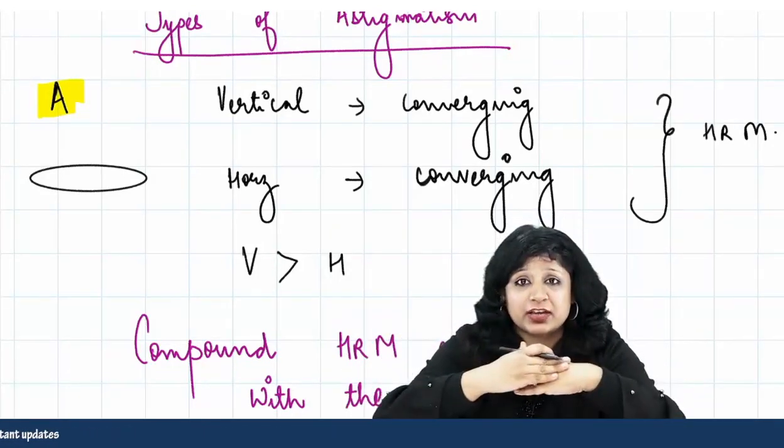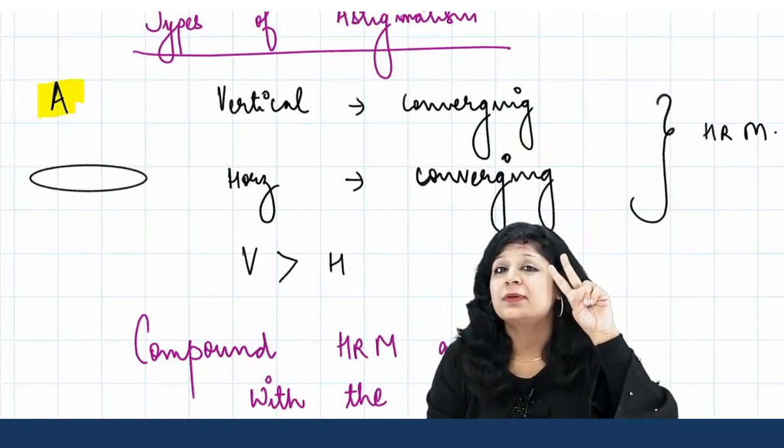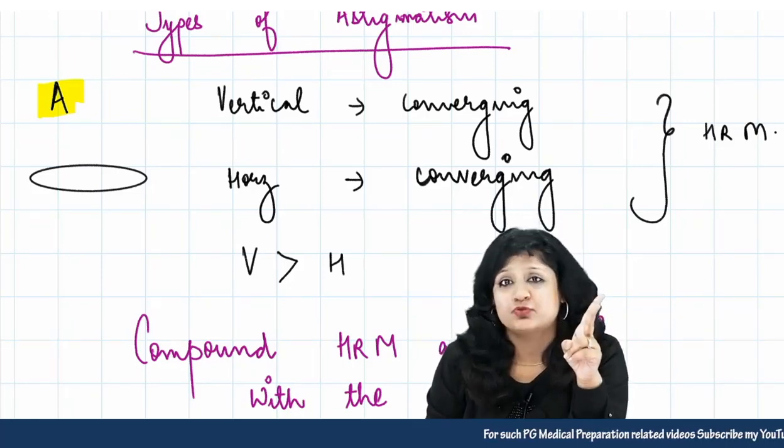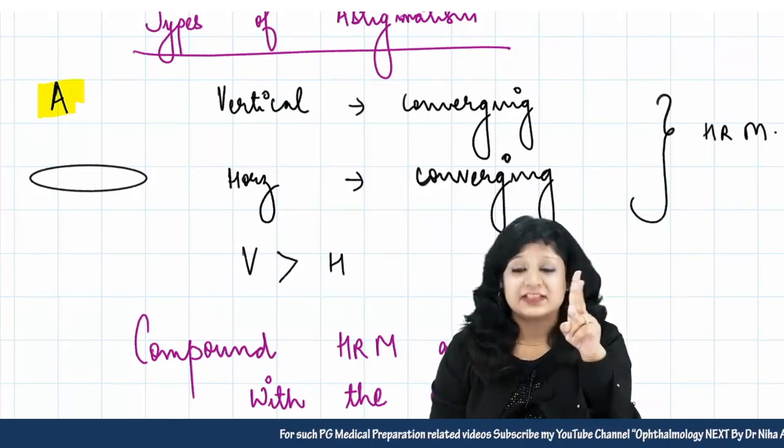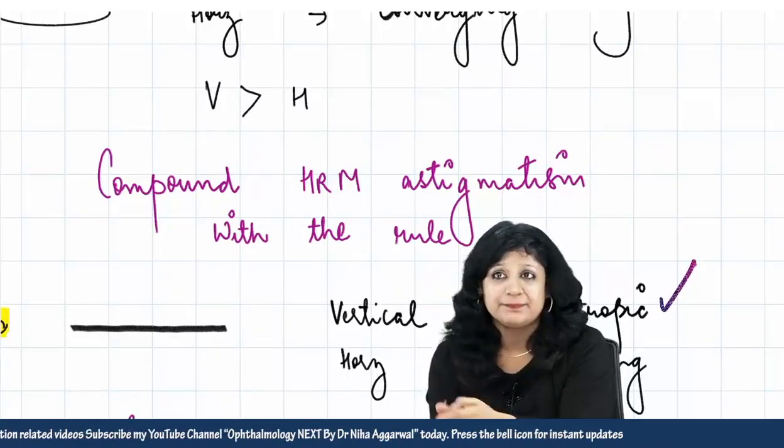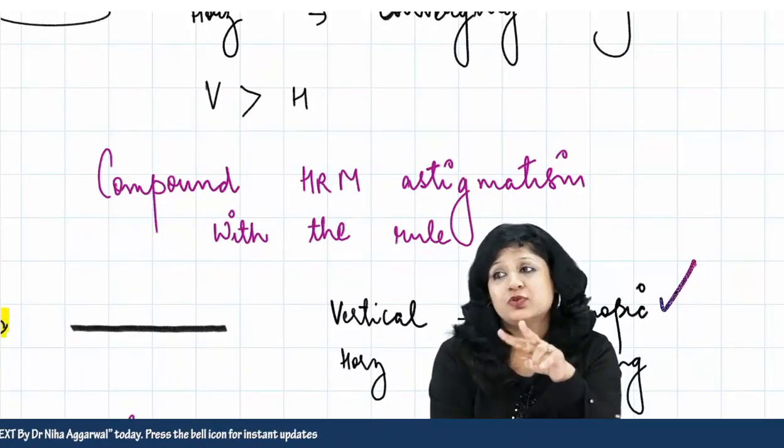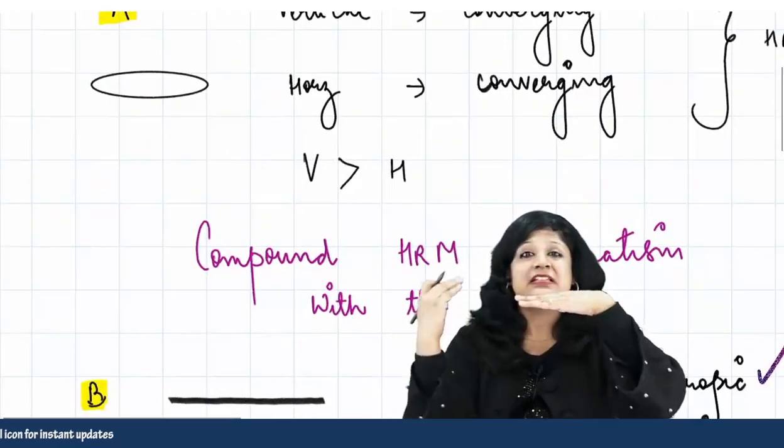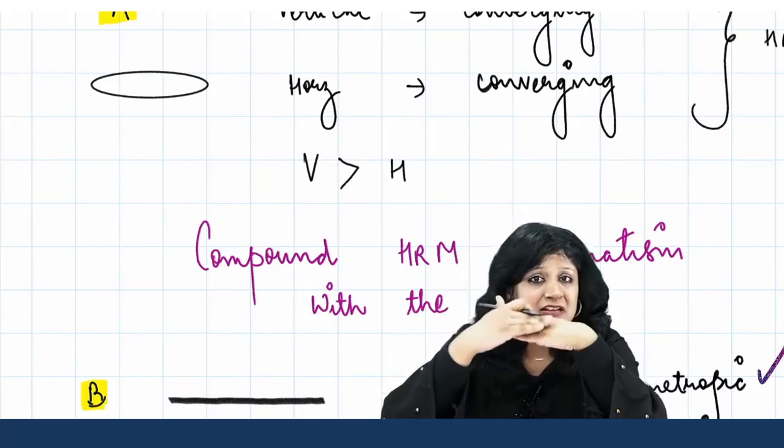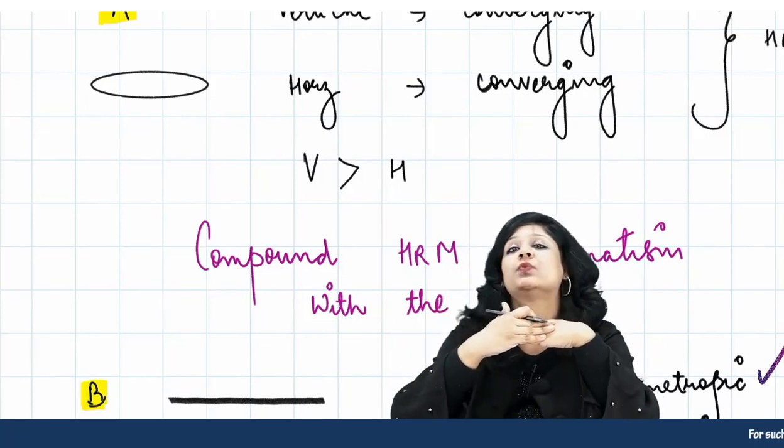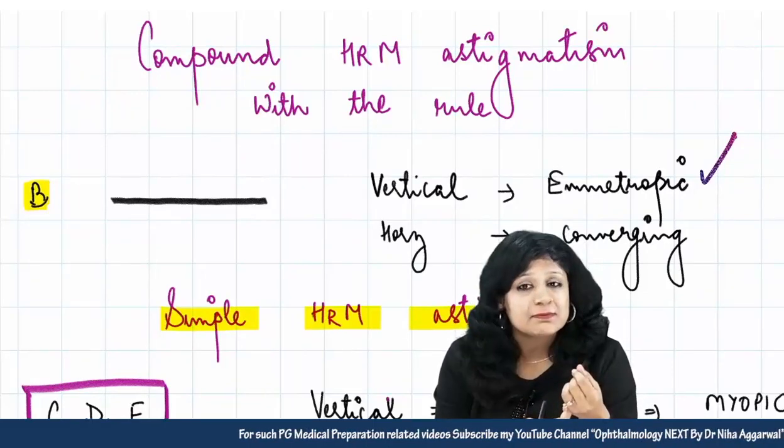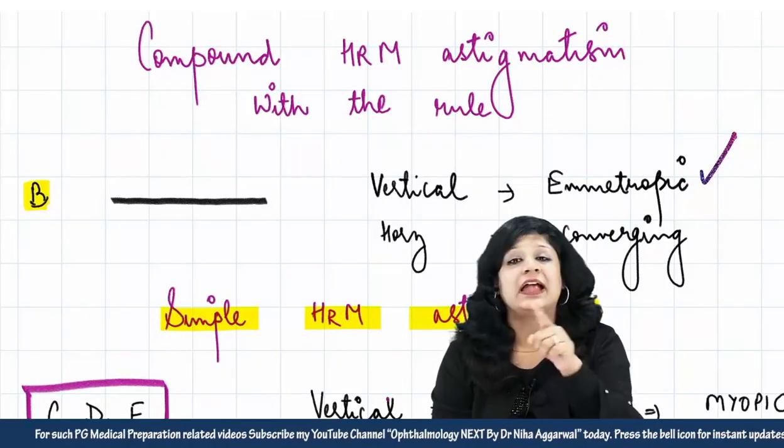Now both are converging. So both converging means it will be a compound astigmatism, and because it is converging, it is hypermetropia. So the type of astigmatism will be compound hypermetropic astigmatism. Now it can be with the rule or against the rule. If you see this oblong is horizontal, that means vertical rays are converging more than the horizontal, and therefore it is compound hypermetropic astigmatism which is with the rule at point number A.